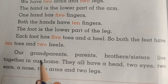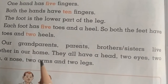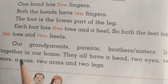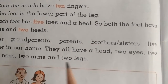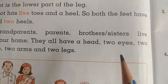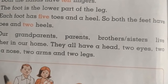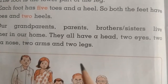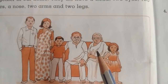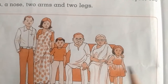Our grandparents, parents, brothers, sisters live together in our home. They all have a head, two eyes, two ears, a nose, two arms and two legs. This is our family picture. Who are they? Grandparents — Dadaji. And who are they? Parents — Father and Mother. And they are brother and sister.